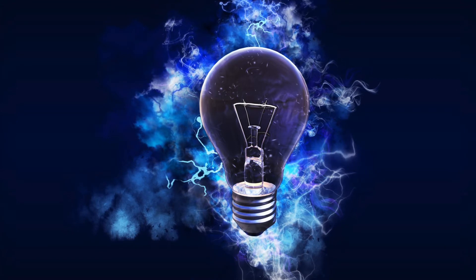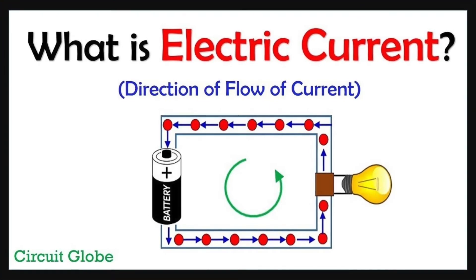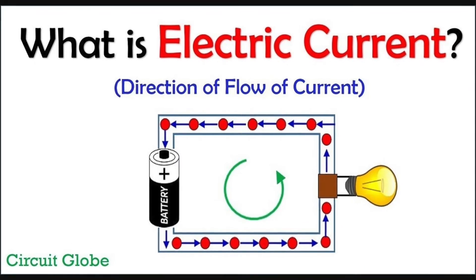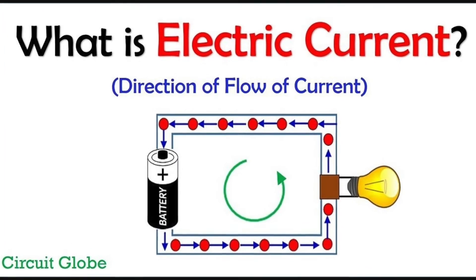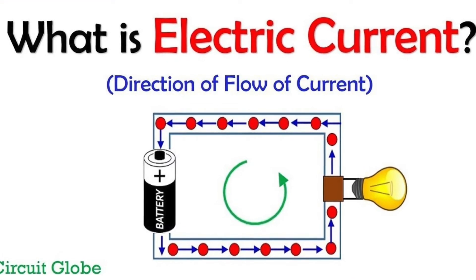The basic and the foremost term is electric current. What is electric current? This is the basic question. It is just the flow of electric charge. What is electric charge? It is just the flow of electrons. So electric current is just the flow of electrons.